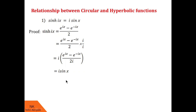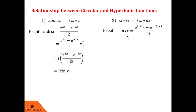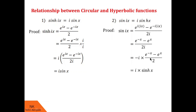Let us go to another relationship: sin(ix) equals i·sinh x. Note that on the left side you have the circular sine function and on the right side you have the hyperbolic sine function. Beginning with the left side, sin(ix) in Euler's exponential form is e raised to i·(ix) minus e raised to minus i·(ix) upon 2i. Now i times i is i squared, and i squared equals minus 1, so we have e raised to minus x minus e raised to x upon 2i. Since 1/i equals minus i, the right-hand side becomes minus i times e raised to minus x minus e raised to x upon 2. Taking out the minus sign, we have i times e raised to x minus e raised to minus x upon 2, which is sinh x. Hence sin(ix) equals i·sinh x.